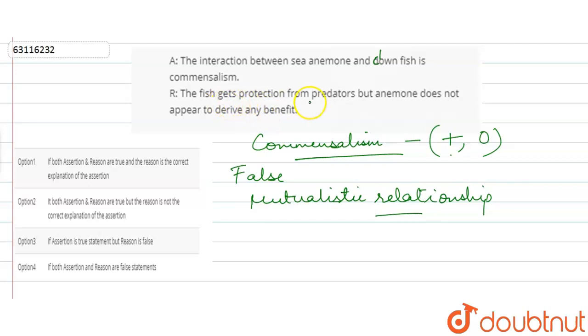So, if it is a mutualistic relationship, then what does the reason do? Our reason is false. That yes, the fish gets protection from predators, but sea anemone also derives a benefit.